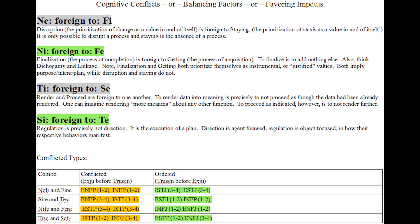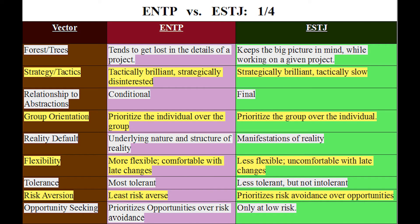Now finally getting to the topic: ENTP versus ESTJ. Let's look at these vectors. Forest versus trees: ENTPs tend to get lost in the details of a project. That might sound weird — people might say ENTPs aren't detail-oriented — but that's absolutely false. We are completely detail-oriented about the details we want to be detail-oriented about.